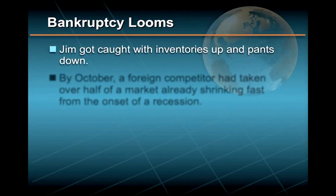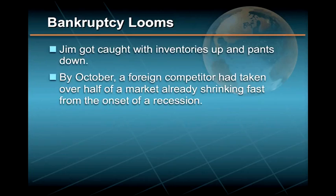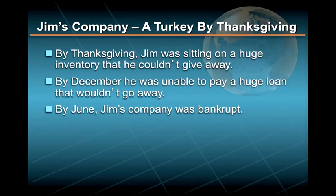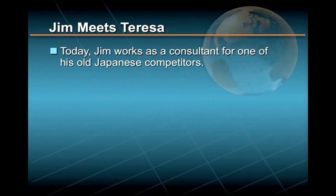So Jim got caught with his proverbial pants down. By October, the Japanese had taken over half of a market that was already shrinking fast from the onset of a recession. By Thanksgiving, Jim found himself sitting on a huge inventory that he couldn't give away. And by December, he was unable to pay a huge loan that wouldn't go away. By June, he was bankrupt.